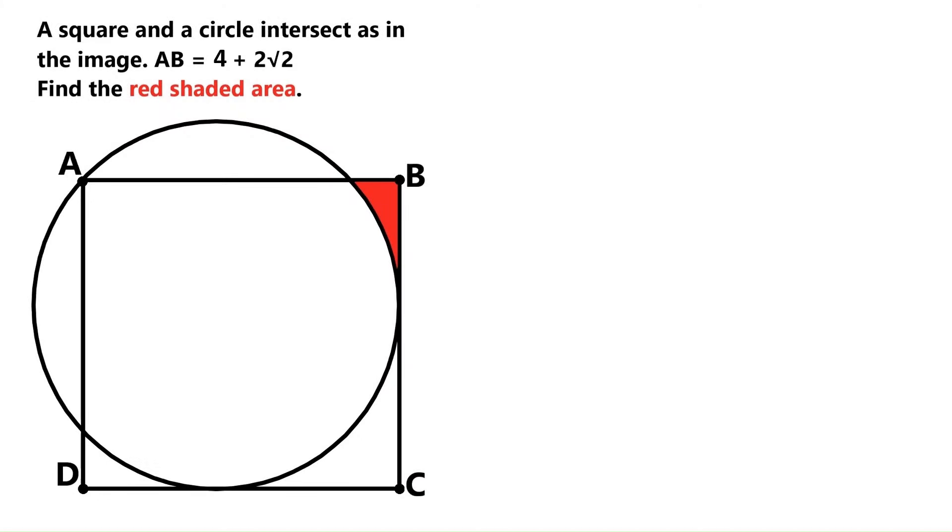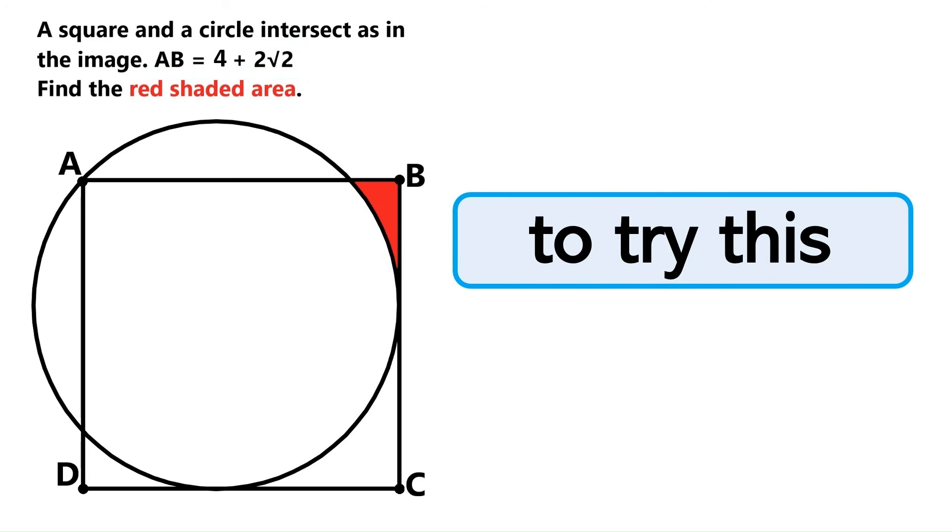In this super interesting geometry problem, we've got this square ABCD, and it partially overlaps with this circle. We know this side AB is 4 plus 2 times the square root of 2, and we are asked to find the area of this red region over here. If you want to try this on your own, now is the time to stop the video, because I'm starting to solve it right now.